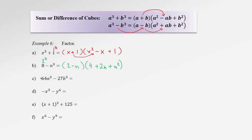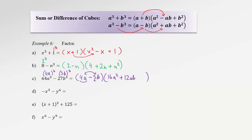In the following example, recognize that 64a cubed is (4a) cubed, since 4 cubed is 64. Note that 64 is both a perfect square (8 squared) and a perfect cube (4 cubed). The last term is (3b) cubed. So our terms under cubes are 4a and 3b with a minus sign. In the long bracket: 4a squared is 16a squared, switch the sign to plus, product is 12ab, and the last term squared is 9b squared. Result: (4a minus 3b)(16a squared plus 12ab plus 9b squared).